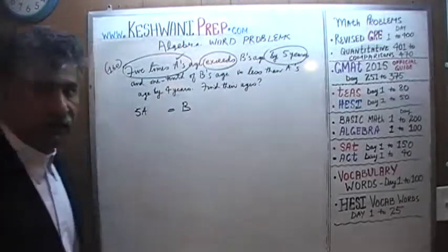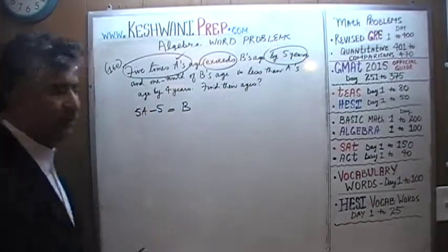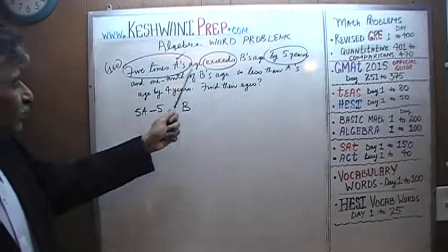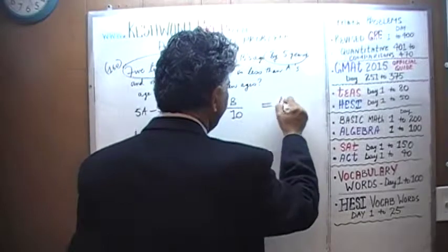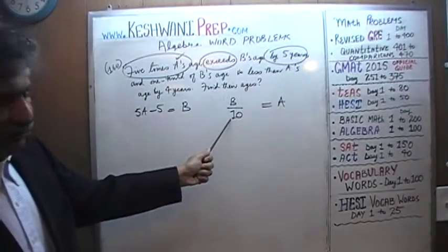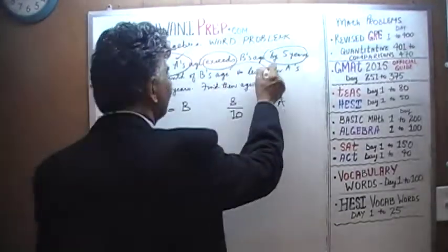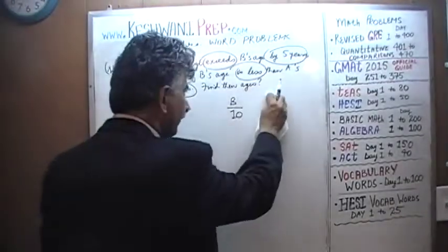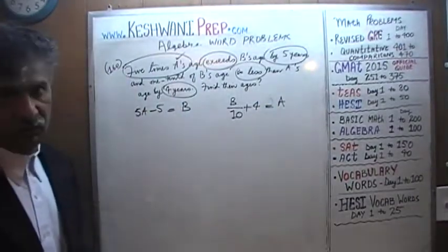Another way: take this quantity, 5 times A's age, which exceeds B's age by 5 years, and subtract 5 from it — now 5A minus 5 equals B's age. Then they tell us that 1-tenth of B's age, which is B over 10, is less than A by 4. If we add 4 to B over 10, they should equal A. Those are our two equations.